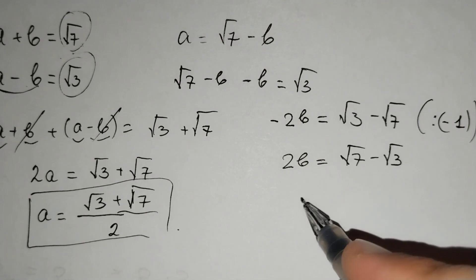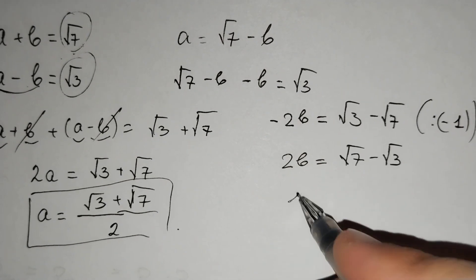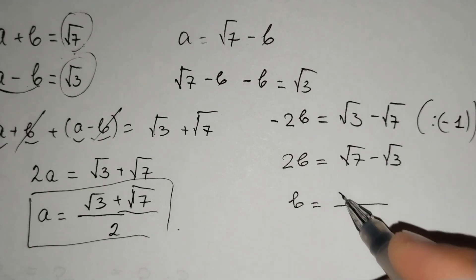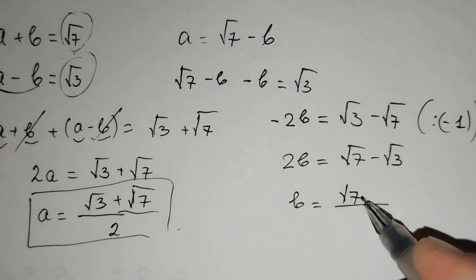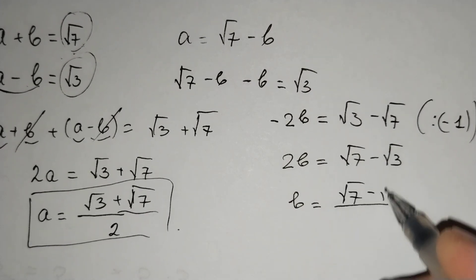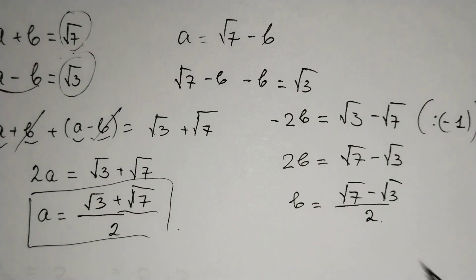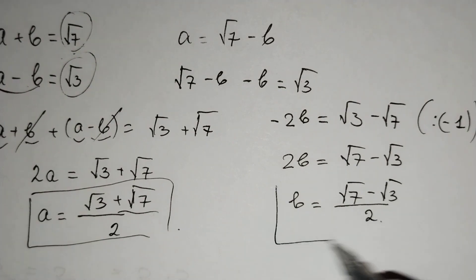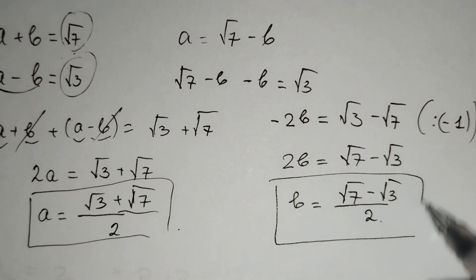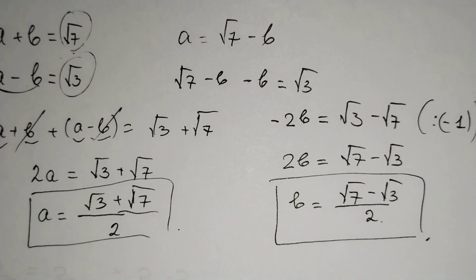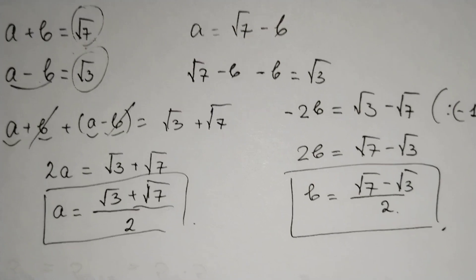And if we find b from here, b equals square root of 7 minus square root of 3 over 2. This is our b. And let's check it.